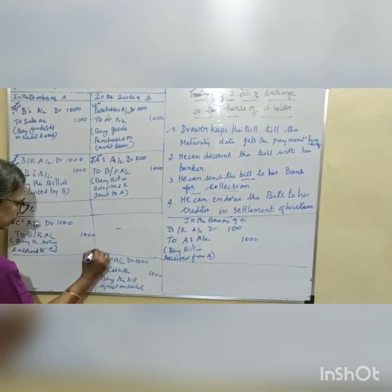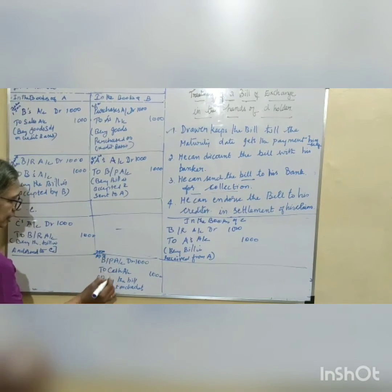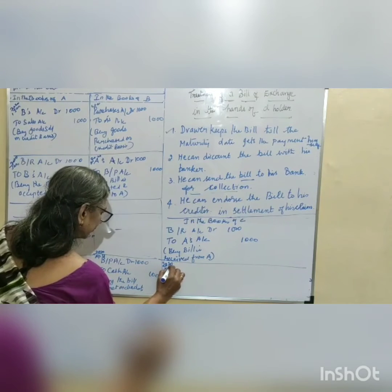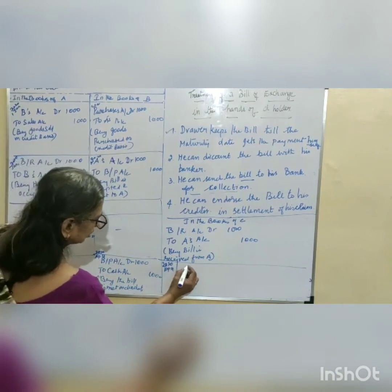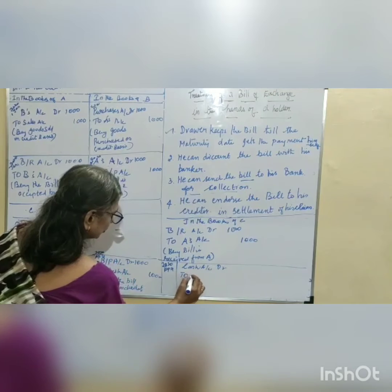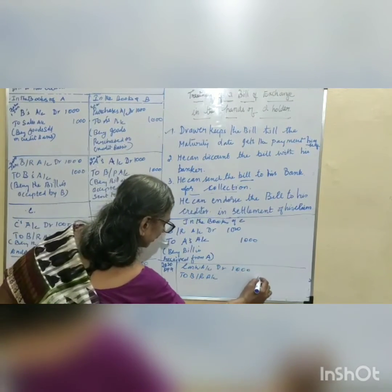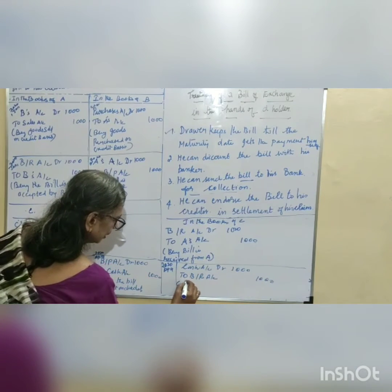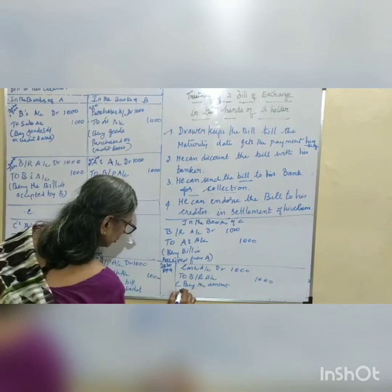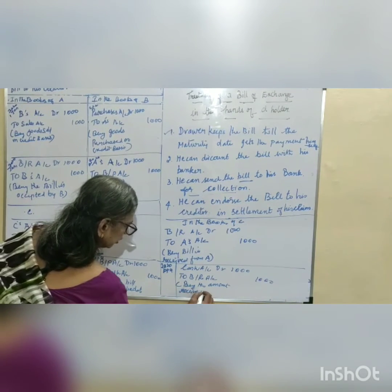For example, the due date is April 4th, 2020. On the same day, 2020 April 4th, C receives the cash. Cash account is debited to bills receivable account, being the amount received by C in due course.